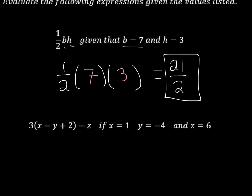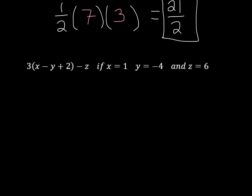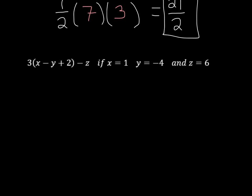So now let's take a look at one that has a little bit more going on with it. There's a few more letters. So again, the first thing we're going to do here is wherever we see an x, we're going to replace it with 1. So we have an x right there. Where we see y, we're going to put in negative 4. And then where we have z, we're going to put in 6.